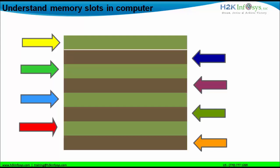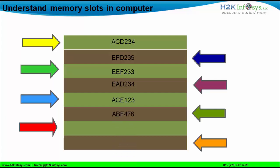If you look at the memory slots, the internal architecture of this computer has been done in such a manner that each of these memory slots are defined with hexadecimal numbers. A hexadecimal number is a combination of alphabets from A to F and numeric numbers from 0 to 9. So the first slot is given a particular hexadecimal number, the second slot is this, the third slot is given this hexadecimal number, and so on for the fifth, sixth, seventh, eighth, and ninth slots. These are hexadecimal numbers used to specify or define each memory slot.